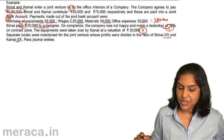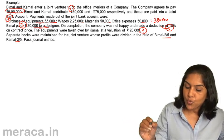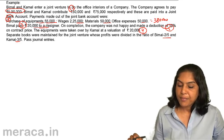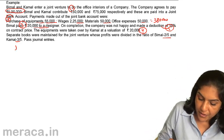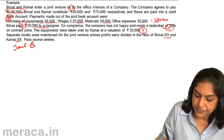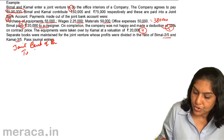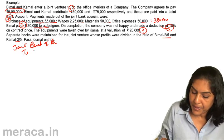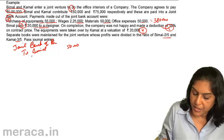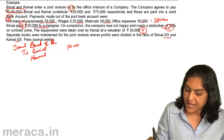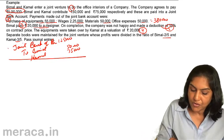Let us quickly pass the journal entries. First is capital contribution: Bimal and Kamal contribute 50,000 and 75,000 respectively. Therefore, joint bank account debit — to Bimal 50,000 and to Kamal 75,000 — totaling 1,25,000 in the bank. This is your first entry.